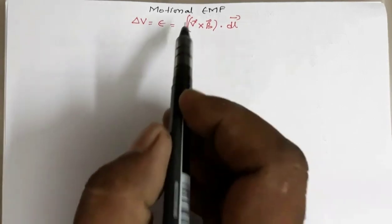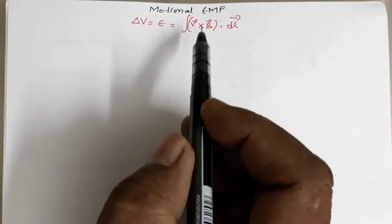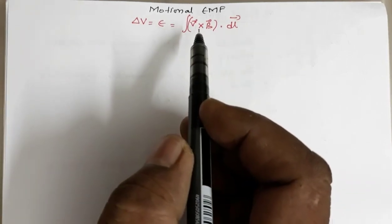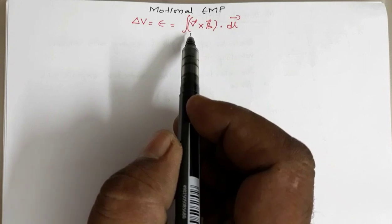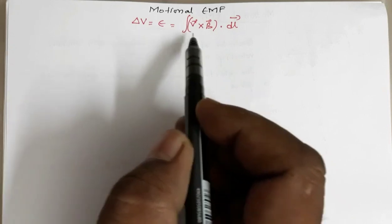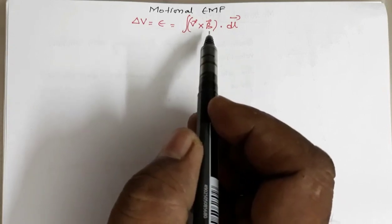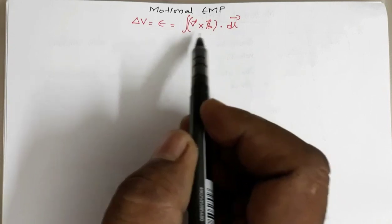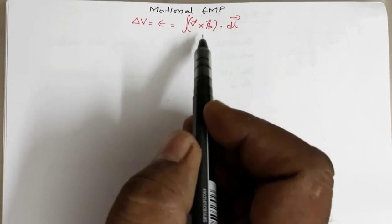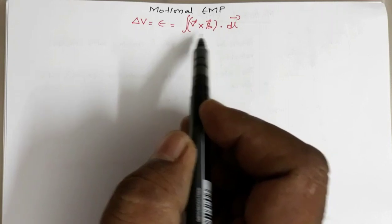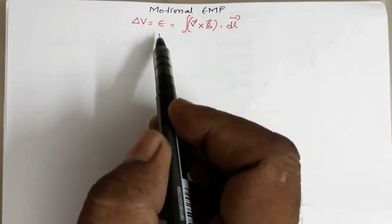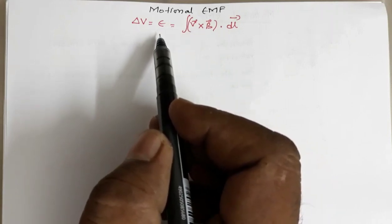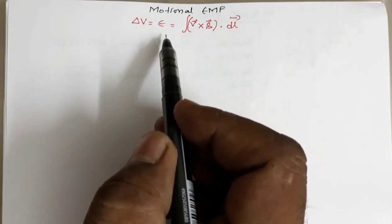Now V cross B — so that means if V, the velocity vector of the conductor, and the direction of the magnetic field, they are parallel or anti-parallel, in that case the potential difference or the EMF will be zero.